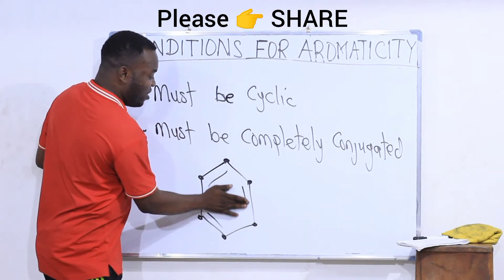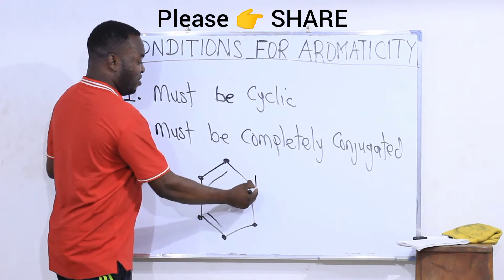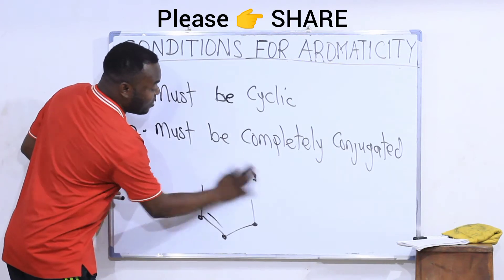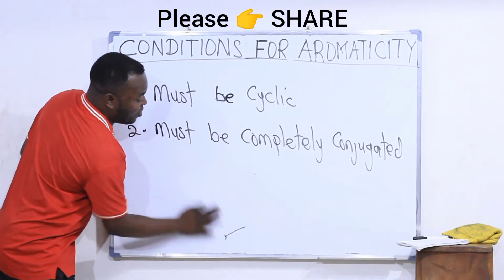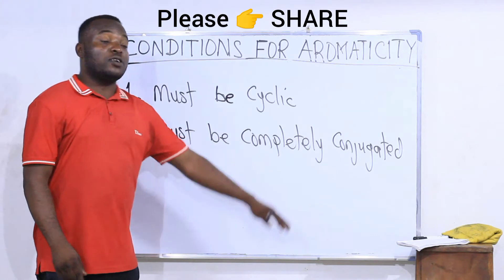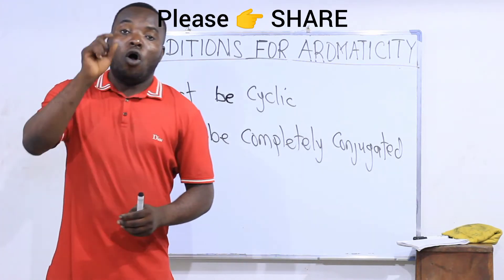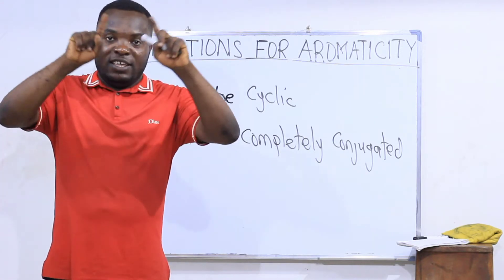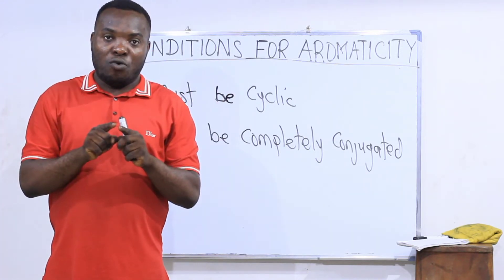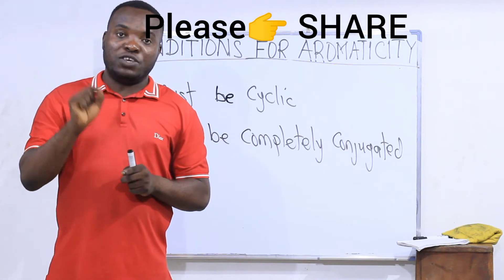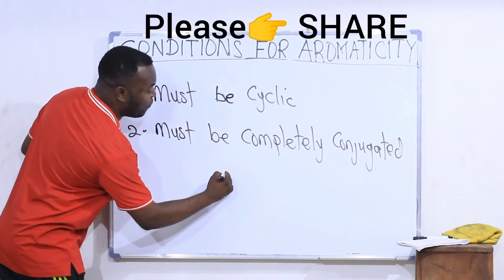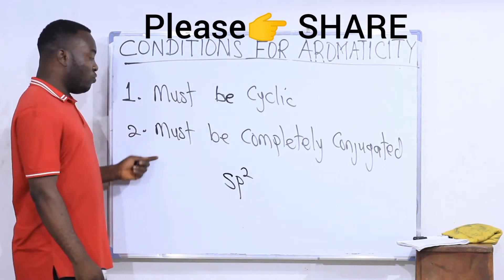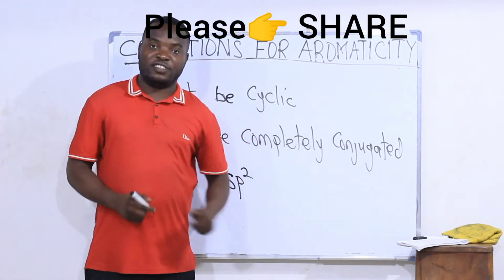There are cases where you may not have a double bond but rather a charge — most of those are also aromatic. Another way of saying the compound must be completely conjugated is that all carbon atoms present in that molecule must be sp2 hybridized. If the hybridization of every carbon in the molecule is sp2, then it also means the compound is completely conjugated.